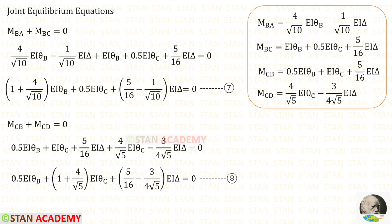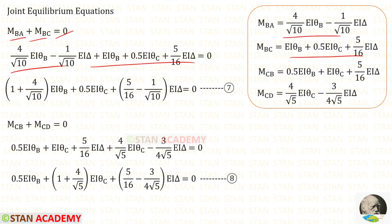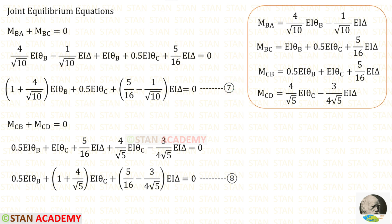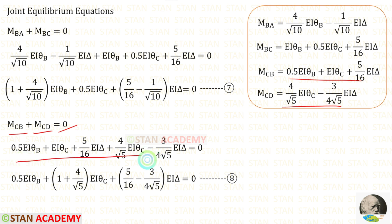Now let us make the joint equilibrium equations. At joint B, when we add MBA and MBC it will be zero. Let us apply the expressions for MBA and MBC and add them. After adding, we will get this equation — let us keep this as equation number 7. At joint C, when we add MCB and MCD it will be zero. Let us apply the expressions for MCB and MCD and add them. After adding, we will get this equation — let us keep this as equation number 8.